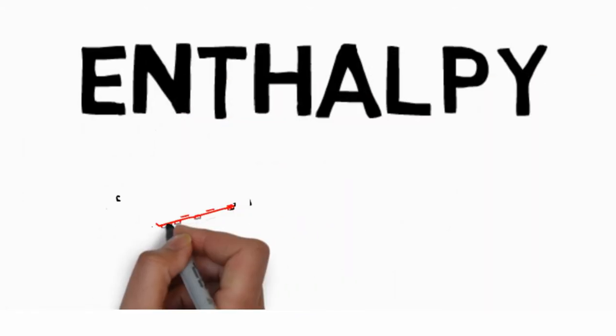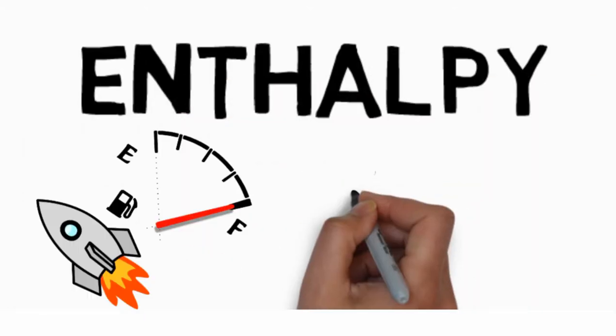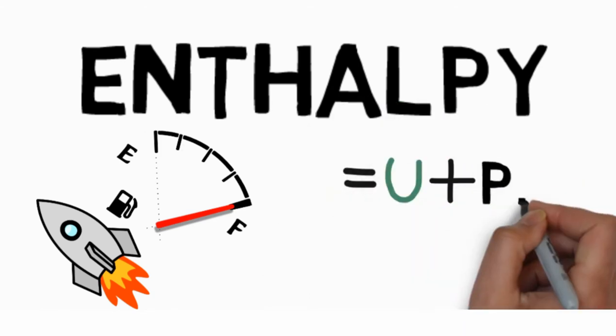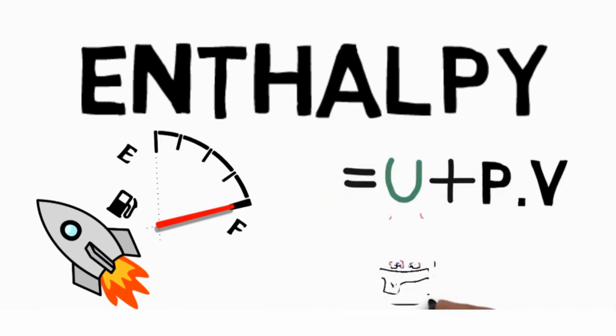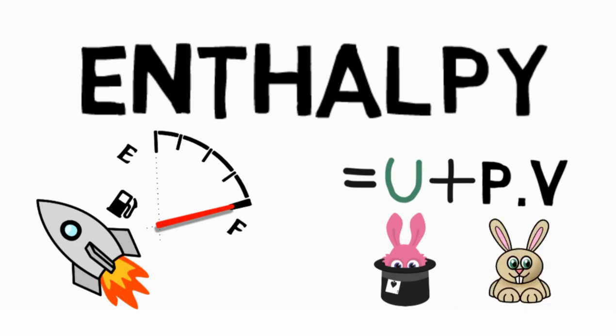Enthalpy is a measurement of energy. It is equal to the internal energy of the system plus the product of the pressure and volume. More technically, it includes the internal energy which is the energy required to create a system and the amount of energy required to make room for it by displacing its environment and establishing its volume and pressure. It is denoted by the letter H. In common use however, only the change in enthalpy is discussed.